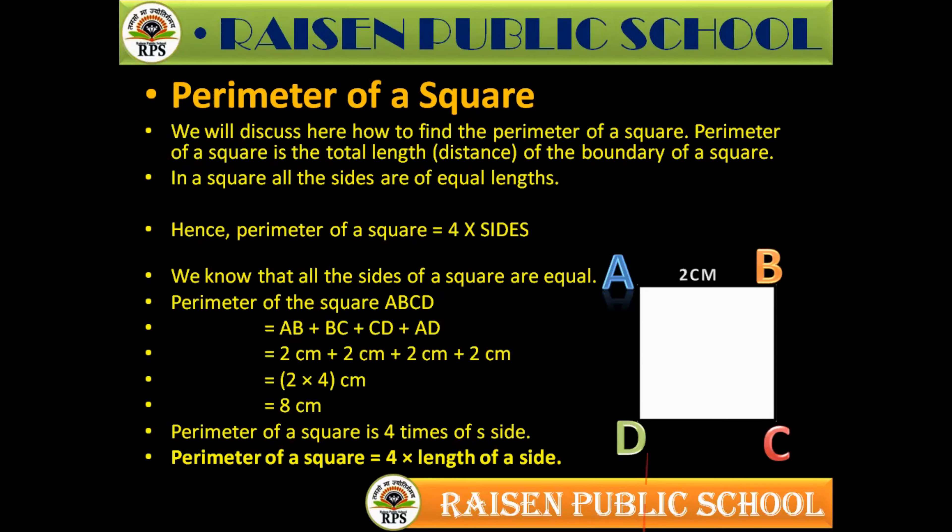You know that a square has 4 sides and all 4 sides are equal — not one small and one big, all 4 sides are equal. Let's look at the perimeter of the square.